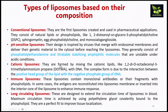Cationic liposomes are formed by mixing cationic lipids; the complex forms due to the interaction between the positive head group of the lipid and the negative phosphate group of DNA. Immunoliposomes contain monoclonal antibodies or their fragments along with phospholipids, and antigens may be reconstituted into the liposome membrane or inserted into the interior core to increase immune response. Long-circulating liposomes are specially designed to extend circulation time in blood, achieved using polyethylene glycol (PEG) covalently bound to the phospholipid; these are also called stealth liposomes.